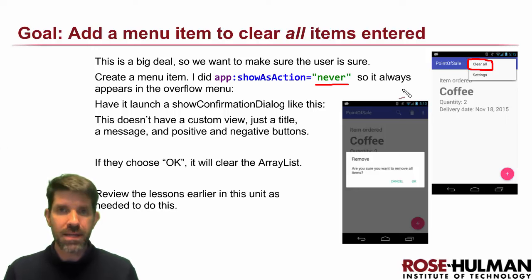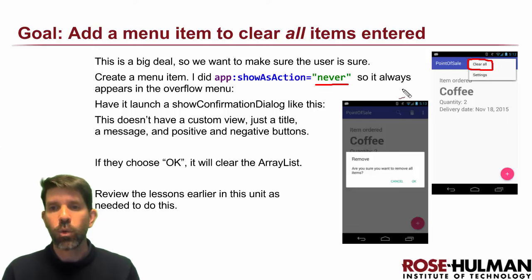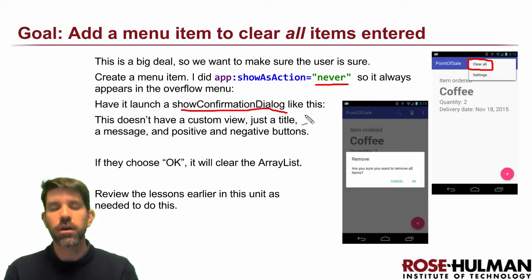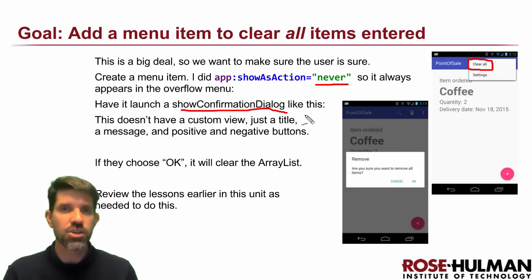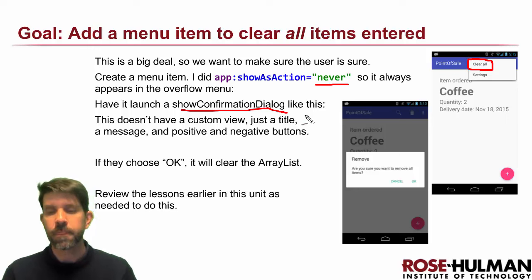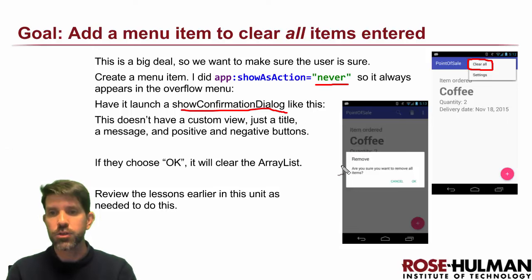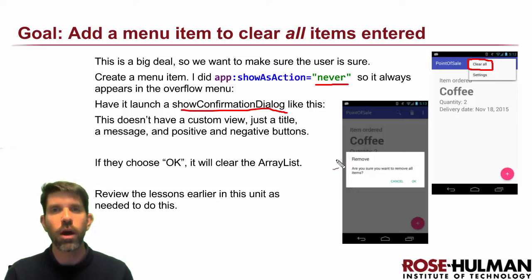So when they do that, rather than immediately clearing the items list, what I instead do is launch a little dialogue. I'd like you to write a little 'show confirmation dialogue' method that's going to create another alert dialogue. This one is going to have four parts — four options that you're going to set in the builder.